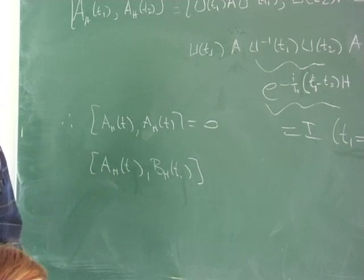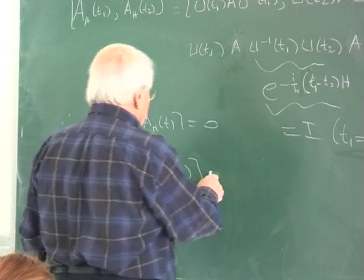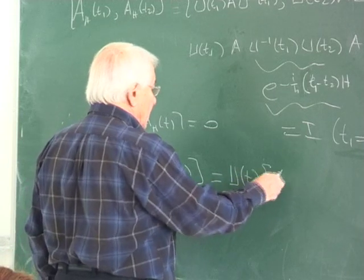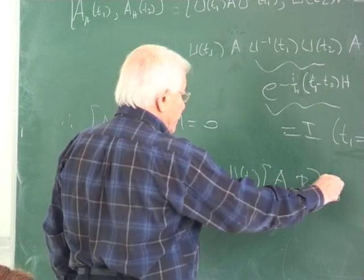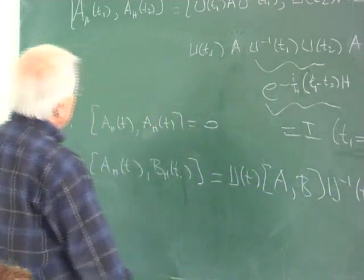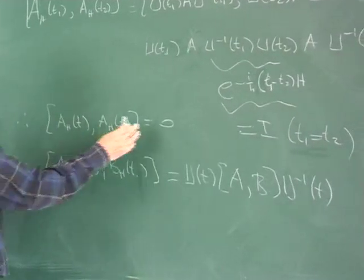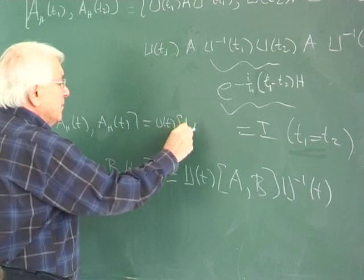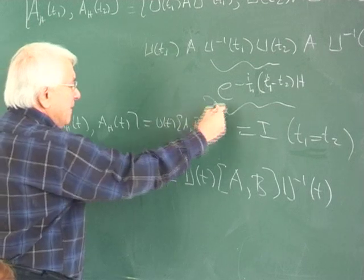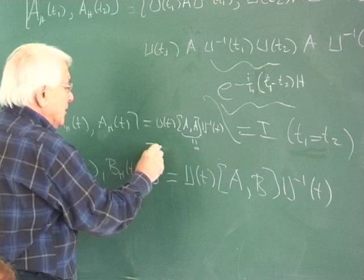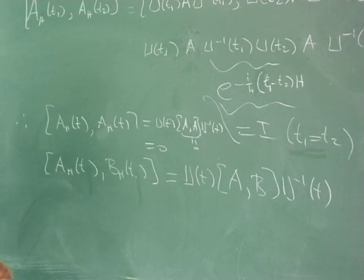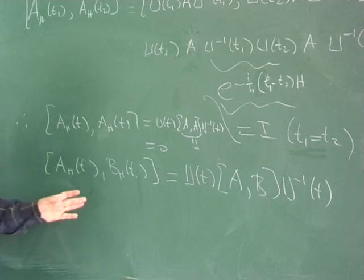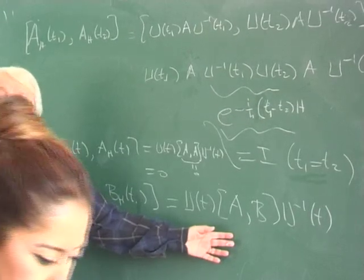So if this is the case, then what this becomes is U(T) [A, B] U-inverse(T). Similarly, U(T) [A, A] U-inverse(T) — therefore this is zero, thus the entire thing is zero. So it is a nice theorem. It tells you that if you take them all at equal time, the Heisenberg picture commutators make sense.